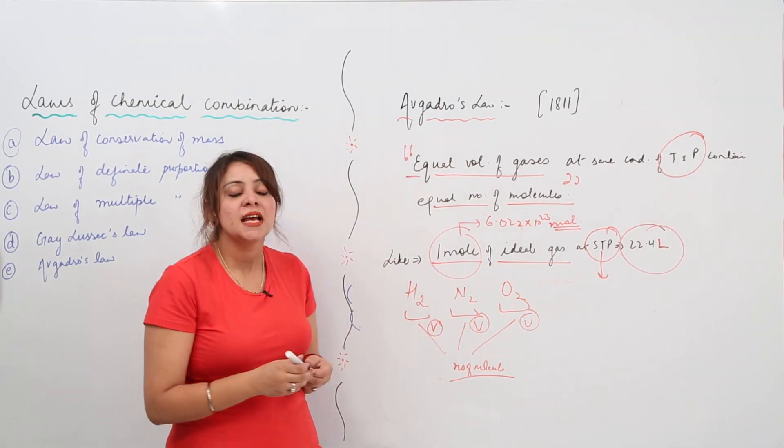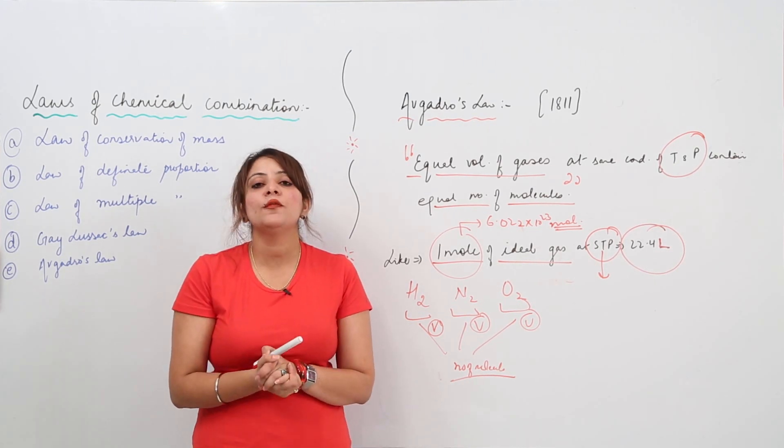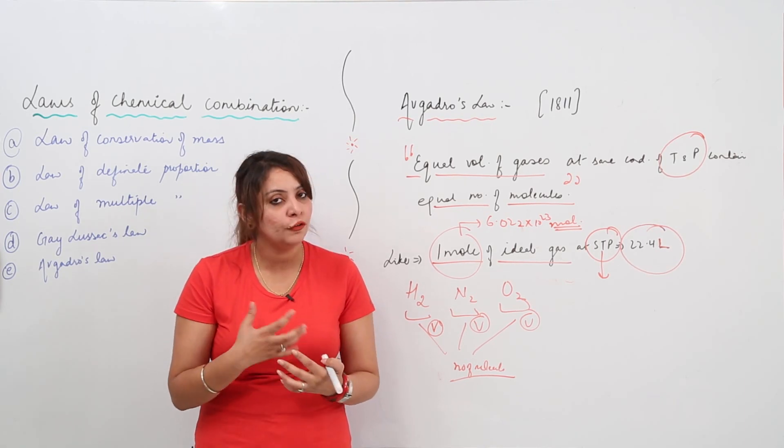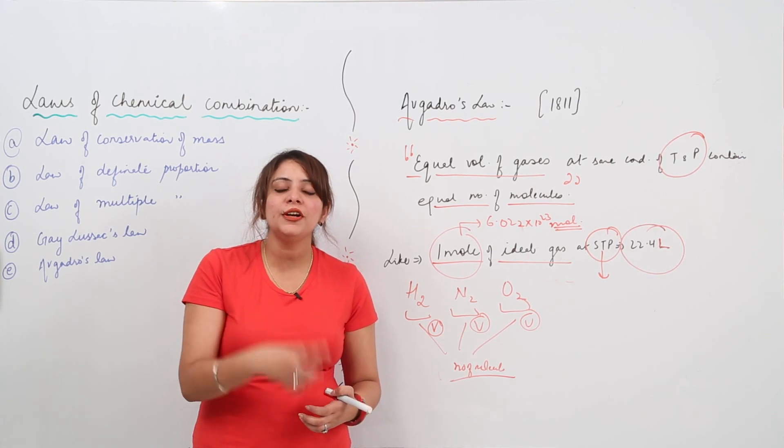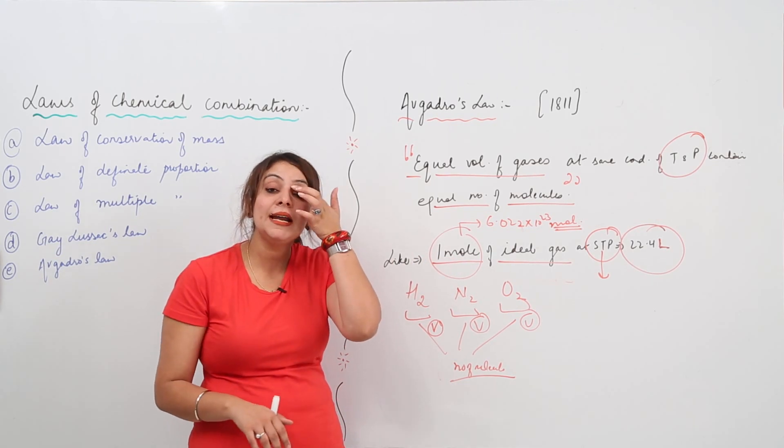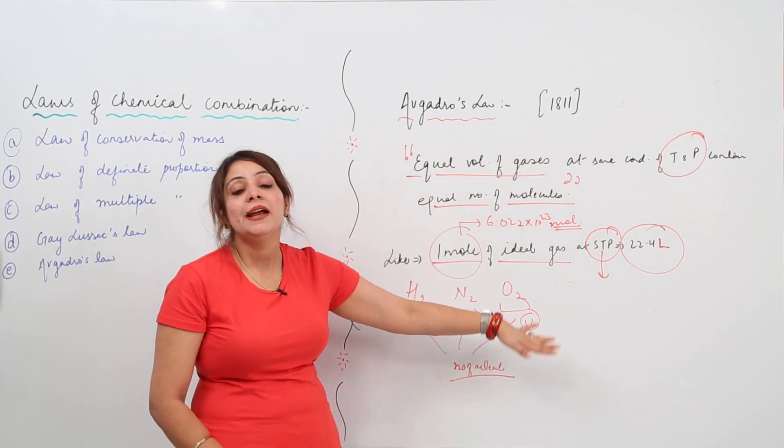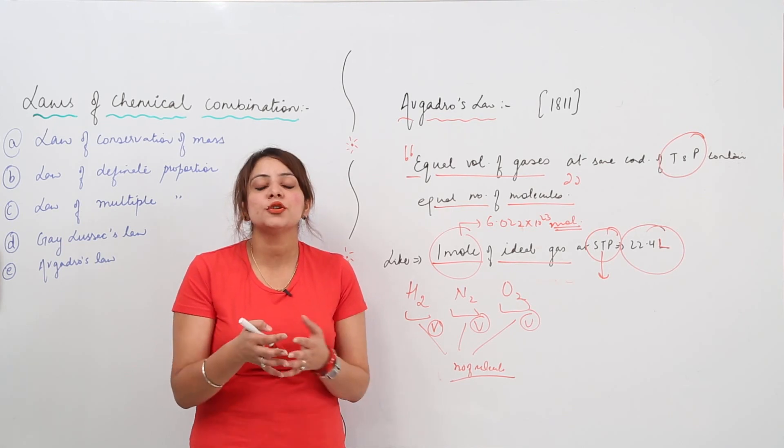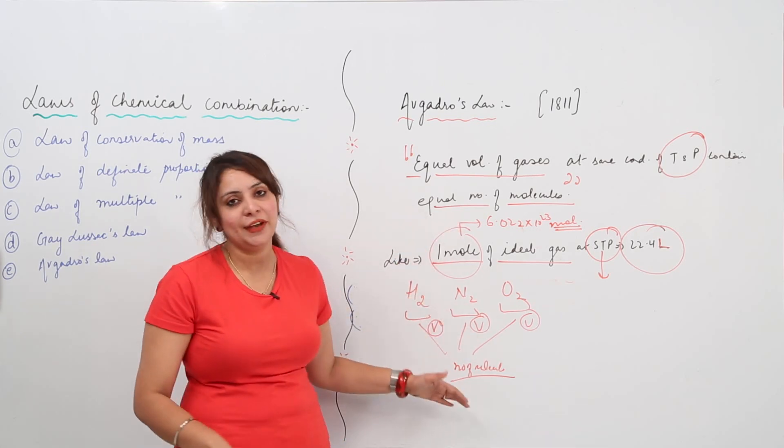So this is what this law states: irrespective of the nature of the gas, whether it is O2, N2, or H2, if the volume is same and the conditions of temperature and pressure are same, then it will possess the same number of molecules. We are relating the volume and the number of molecules. This is Avogadro's Law.